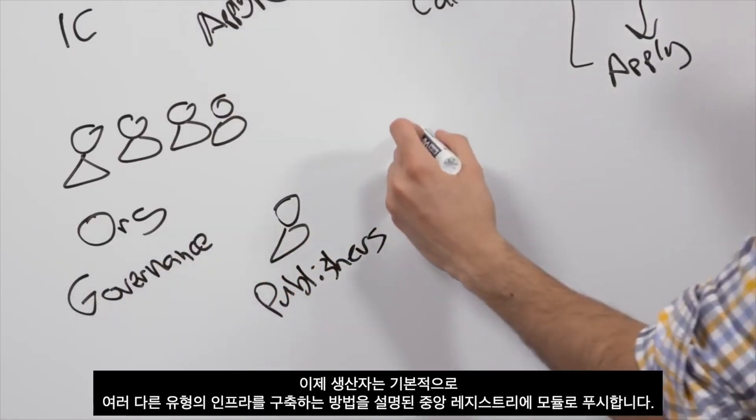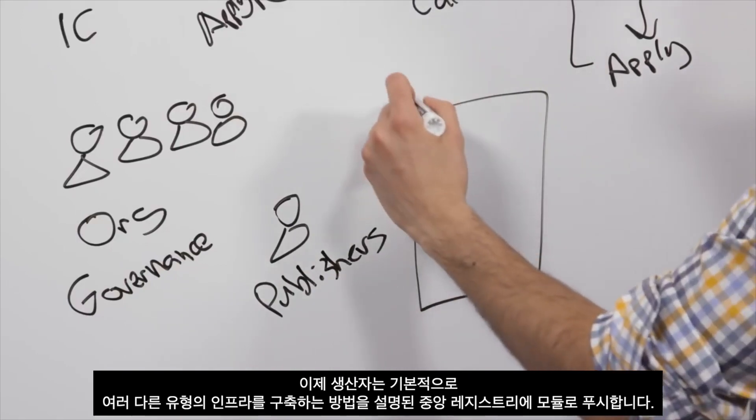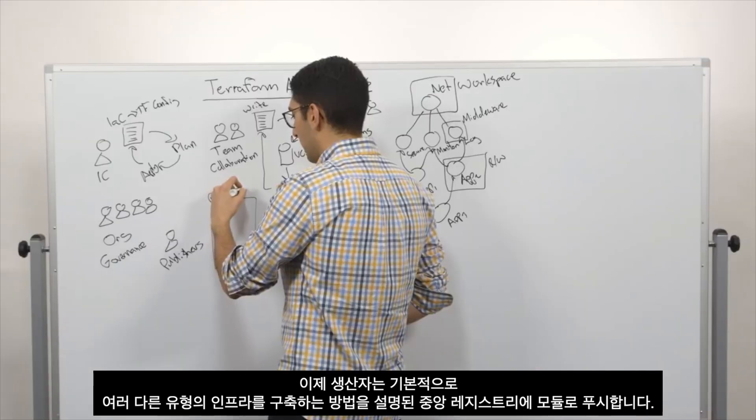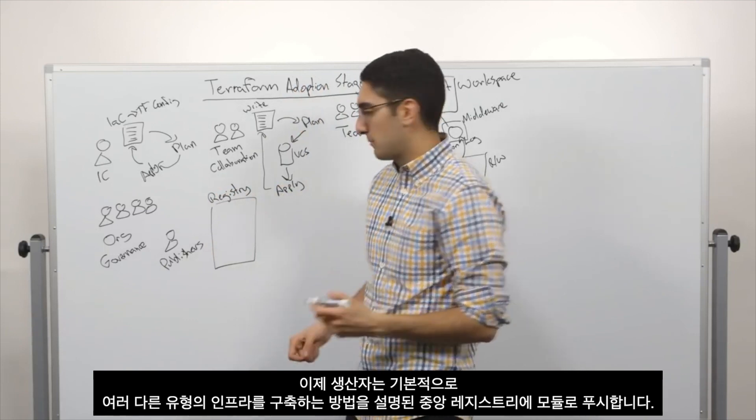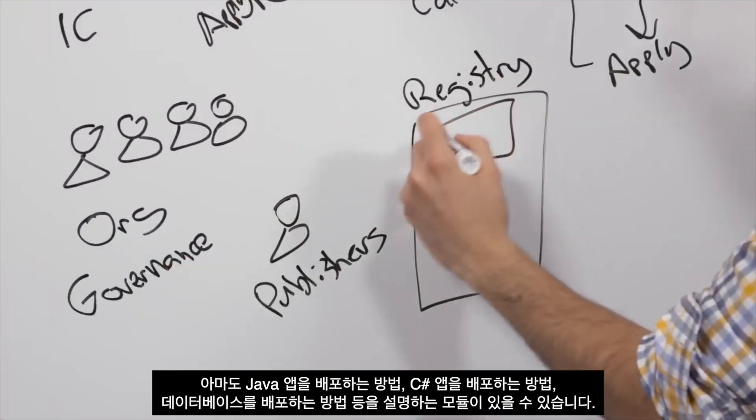So what we'll start with is a limited number of publishers, and what the publishers do is push into a central registry modules that basically describe how to deploy different types of infrastructure.